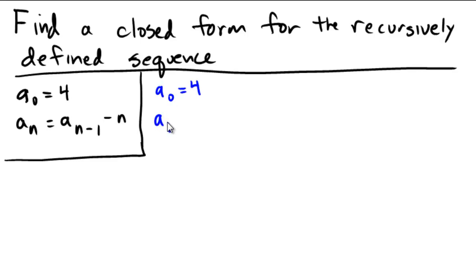What would a sub 1 be? Well, a sub 1 would be the previous term that we see, which is a 4, minus n. And since we're in a sub 1, that means we're subtracting 1. Notice how I wrote this term inside of the parentheses exactly like it looks in the line above.